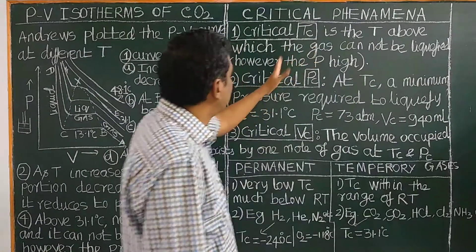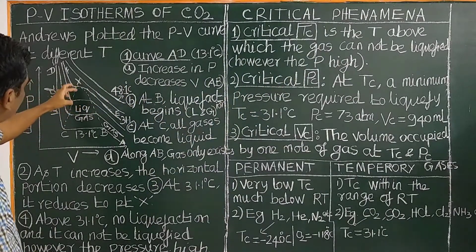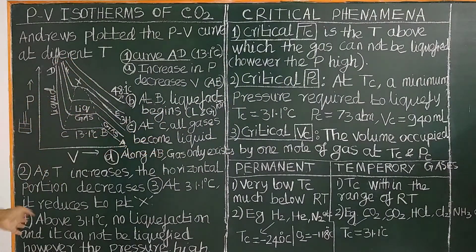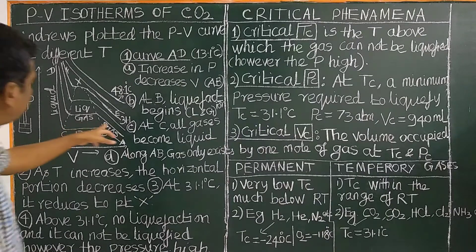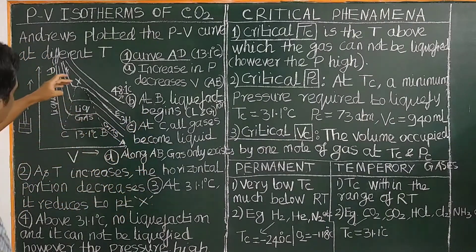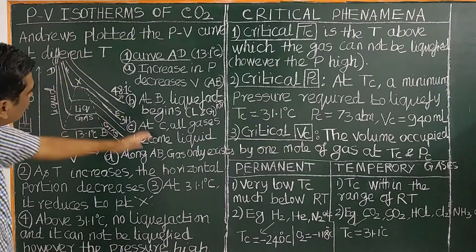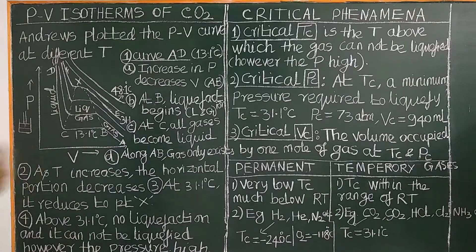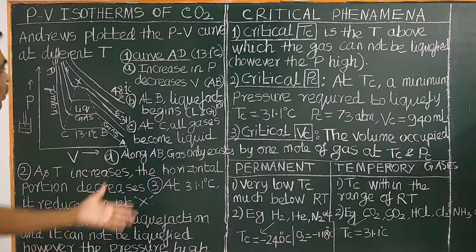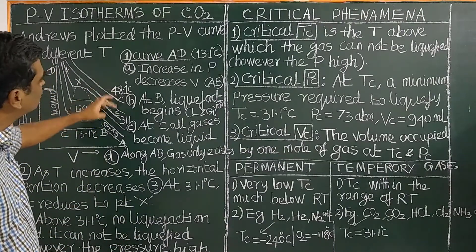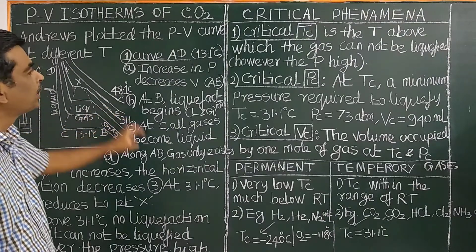What is critical temperature? It is the temperature above which a gas cannot be liquefied. The critical temperature of carbon dioxide is 31.1 degree Celsius — the temperature above which the gas cannot be liquefied, no matter how much pressure you apply. For example, at 48.1 degrees, the gas cannot be liquefied because the temperature is above the critical temperature of 31.1°C.